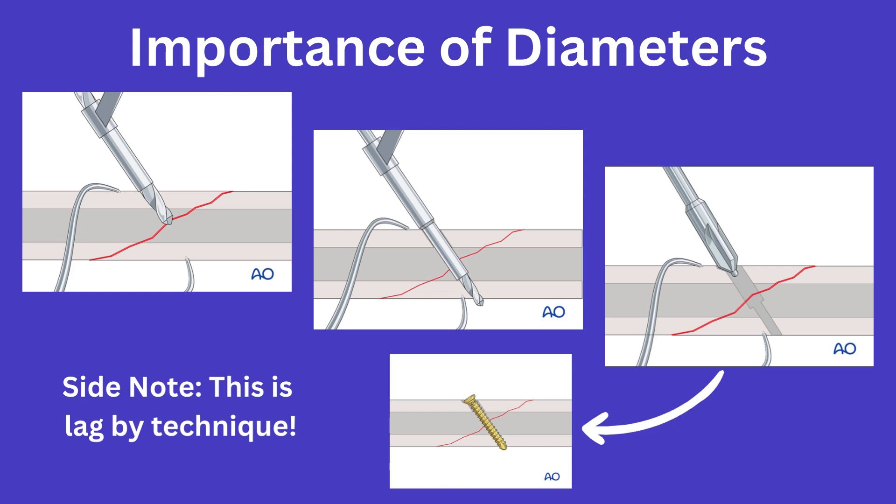Finally, counter sinking the head of the screw for greater surface area purchase on the near cortex is done, which again, knowing the head diameter would obviously play into placement here.